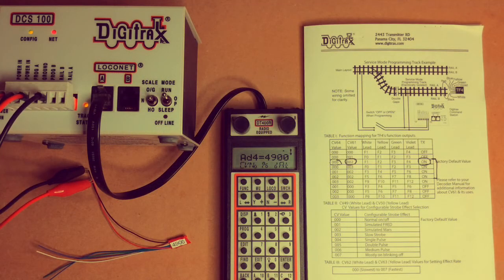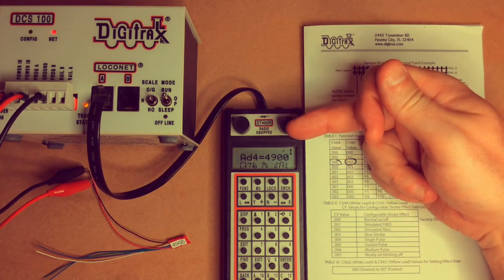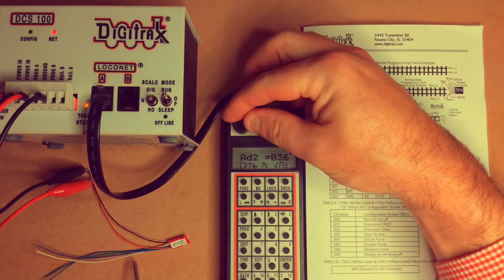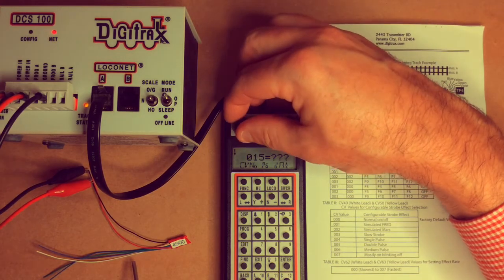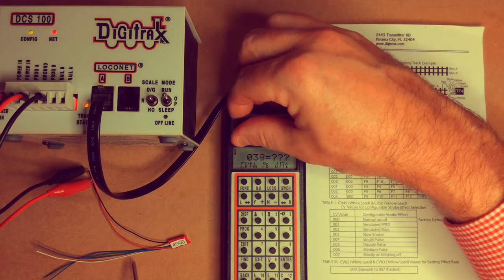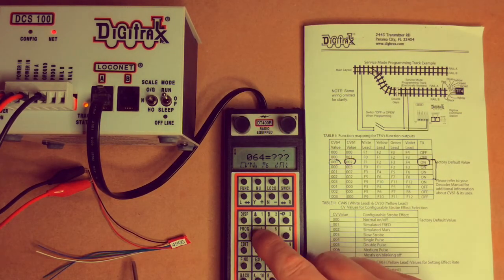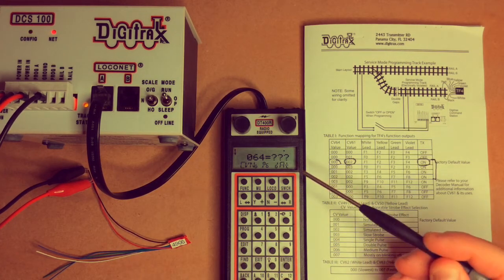Let's go ahead and program these function mappings for the TF4. What we need to do is turn our attention to CV64. How we do that with the DT400 is we press on the right-hand throttle once and using the potentiometer here we dial up CV64. Now can we go ahead and enter CV64 using the keypad? Yes we can.